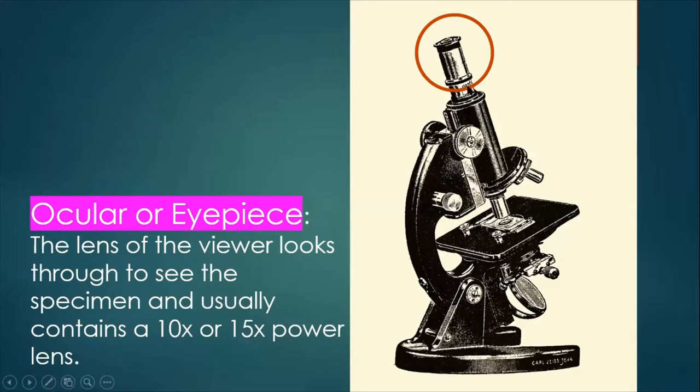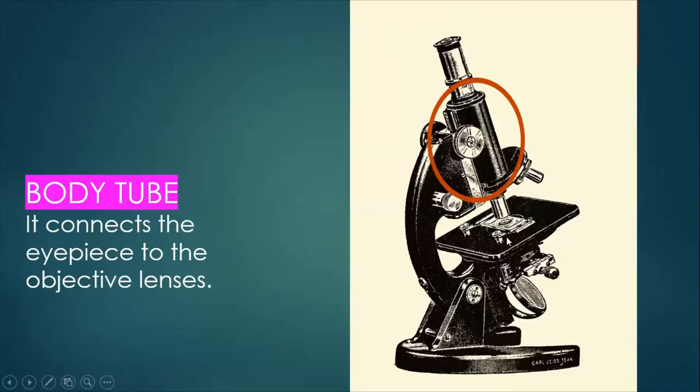A specimen is anything that we view under the microscope. Next is body tube. It connects the eyepiece to the objective lenses.